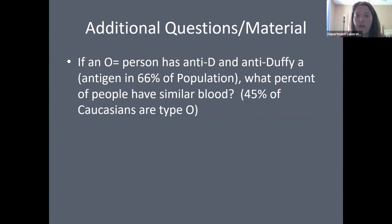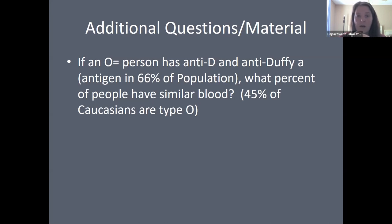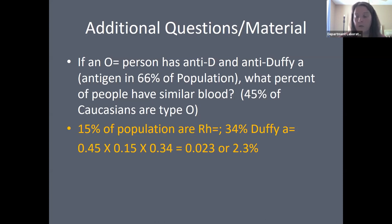If a patient has multiple antibodies, multiply all antigen-negative frequencies together to find compatible donors. For example, if a patient has anti-W, anti-X, and anti-Y: W antigen-negative = 25%, X and Y antigen-negative = 40%. Multiplying 40% × 25% gives 10% of the population negative for W, X, and Y antigens. For an O-negative patient with anti-D and anti-Duffy A: 45% are type O, 15% are RH negative, and 34% are Duffy A negative. 45% × 15% × 34% = approximately 2.3% of the population has similar blood.